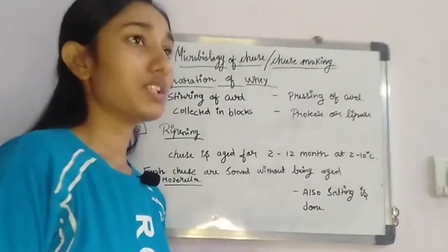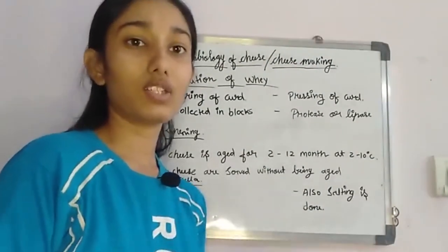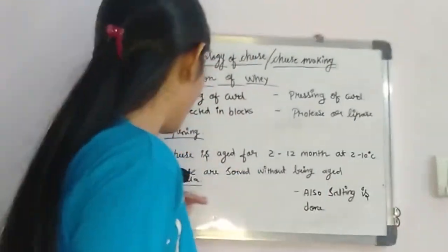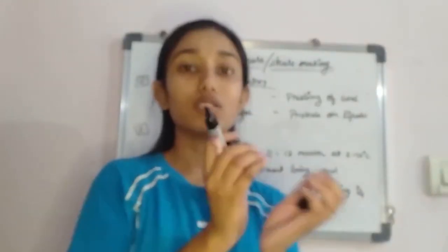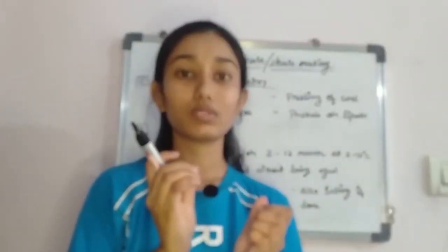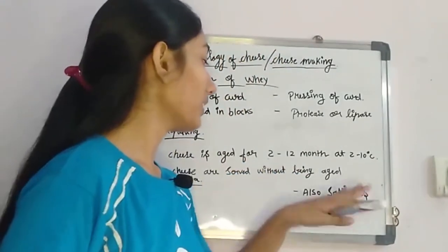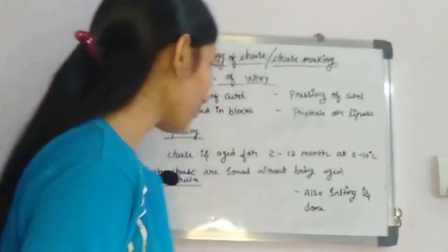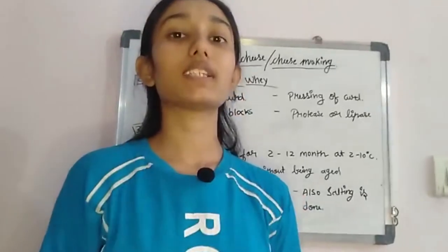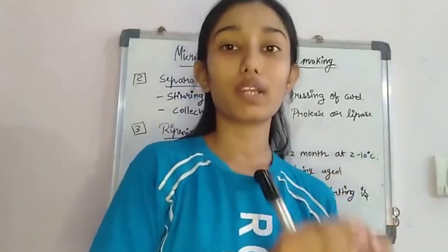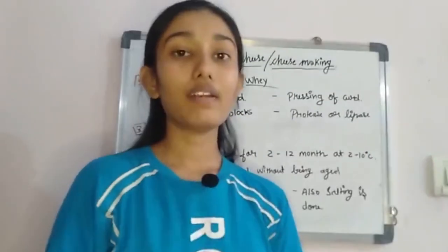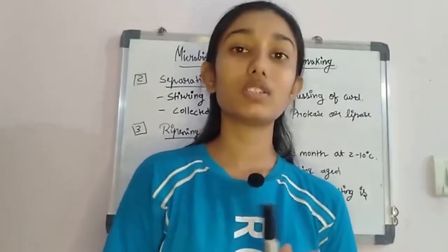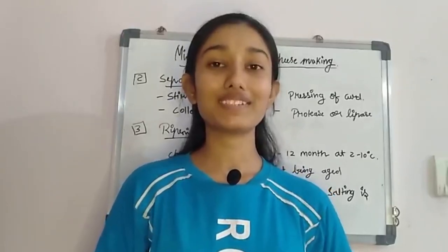Hard cheese like cheddar is aged for a long period of time, unlike mozzarella which is soft. So aging depends on the desired texture and flavor. Salting also occurs at this stage, which gives the salty flavor found in cheese. So these three procedures — coagulum formation through microorganisms and rennet enzyme, whey separation, and ripening — decide how the flavor and texture of the cheese will be.